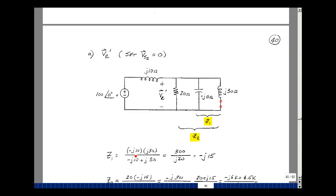The product over the sum here would be minus j10 times j30 over minus j10 plus j30. That gives me a j squared, which is a minus 1, times another minus 1. So I get 300 divided by 20, and that's a minus j15. Remember, 1 over j is equal to minus j.